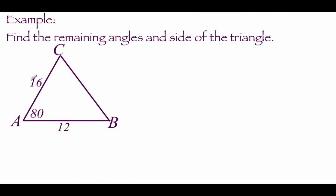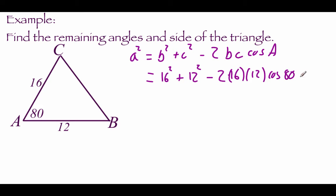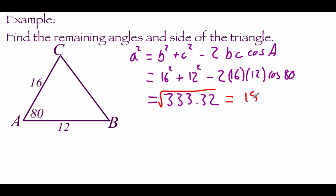This next example looks a little different because instead of being given all three sides, we've got two sides and an angle, and we're going to find the missing side and the missing angles. First, I'm going to find the missing side A using the formula: A squared equals B squared plus C squared minus 2 times B times C times the cosine of angle A. Plugging in, side B is 16 squared plus C is 12 squared minus 2 times 16 times 12 times the cosine of 80 degrees. That gives 333.32 for A squared, and taking the square root we get about 18.3 for side A.